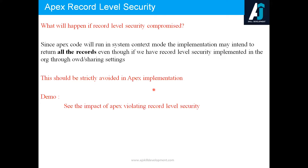At the org level we might have configured sharing rules and configured OWD as private, meaning only the record owner should be able to see the record. But Apex code runs in system context mode and may return all the records to the logged-in user if you build a custom component with Apex. Let's take a demo to show this issue when violating record level security.